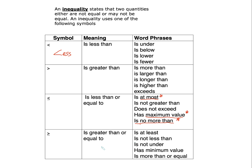For greater than or equals to, the phrases are: at least — another popular one — is not less than, is not under, has a minimum value, and is more than or equals to. I would suggest that you get accustomed to these word phrases so that when you're reading your word problem, you can identify the correct inequality symbol.